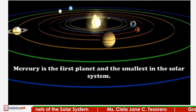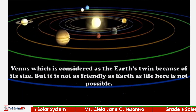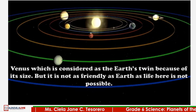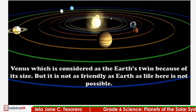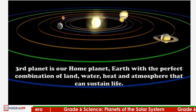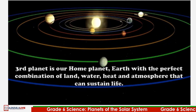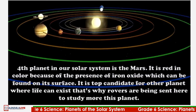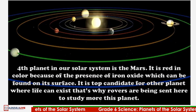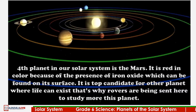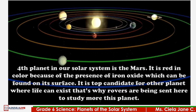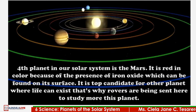Mercury is the first planet and the smallest in the solar system. Venus is considered Earth's twin because of its size, but it is not as friendly as Earth as life here is not possible. The third planet is our home planet, Earth, with the perfect combination of land, water, heat, and atmosphere that can sustain life. The fourth planet is Mars, red in color because of the presence of iron oxide on its surface. It is the top candidate among other planets where life can exist, which is why rovers are being sent there.